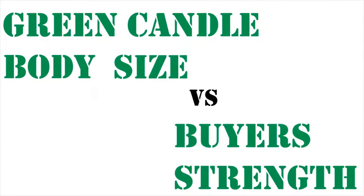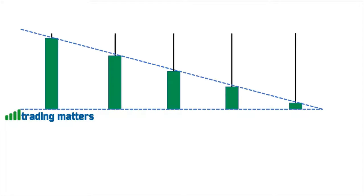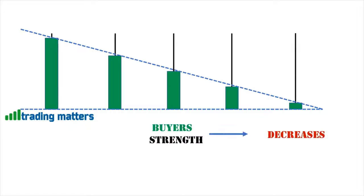Green candle body size versus buyer strength. Looking at candles with different body sizes and joining the opens and closes from left to right, the body size is decreasing. With a decrease in body size, buyer strength also decreases. Conversely, with an increase in body size, buyer strength increases.